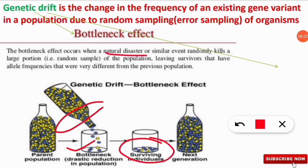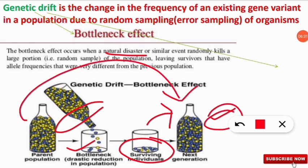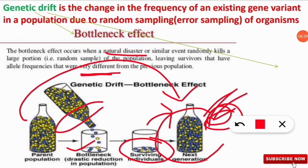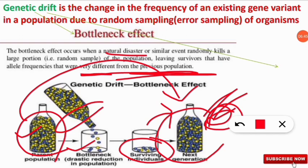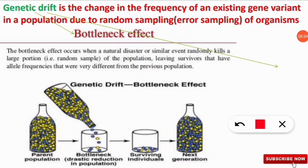As a result, more blue alleles come out while many yellow alleles were suppressed at the neck. In the surviving population, blue alleles are more proportional than yellow. In the next generation, blue becomes dominant, which is very different from the original population where blue and yellow were in equal proportion. This illustrates the bottleneck effect.